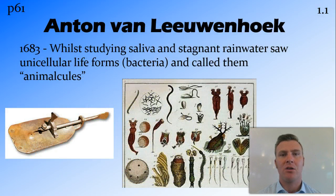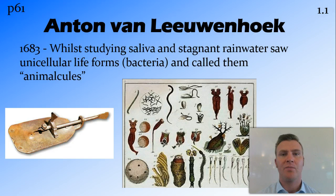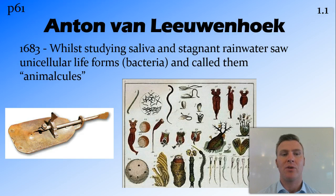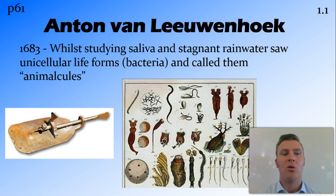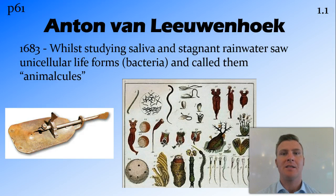In 1683 Anton van Leeuwenhoek created his own type of microscope. It had a little pin that you put the specimen on to hold it, and he looked through a lens at the specimen. He did a few different experiments with saliva and with stagnant rainwater, and he saw little tiny unicellular life. We know now that this is bacteria, but at the time he called them animalcules — so microscopic animals. He could actually see them floating around and behaving like animals.